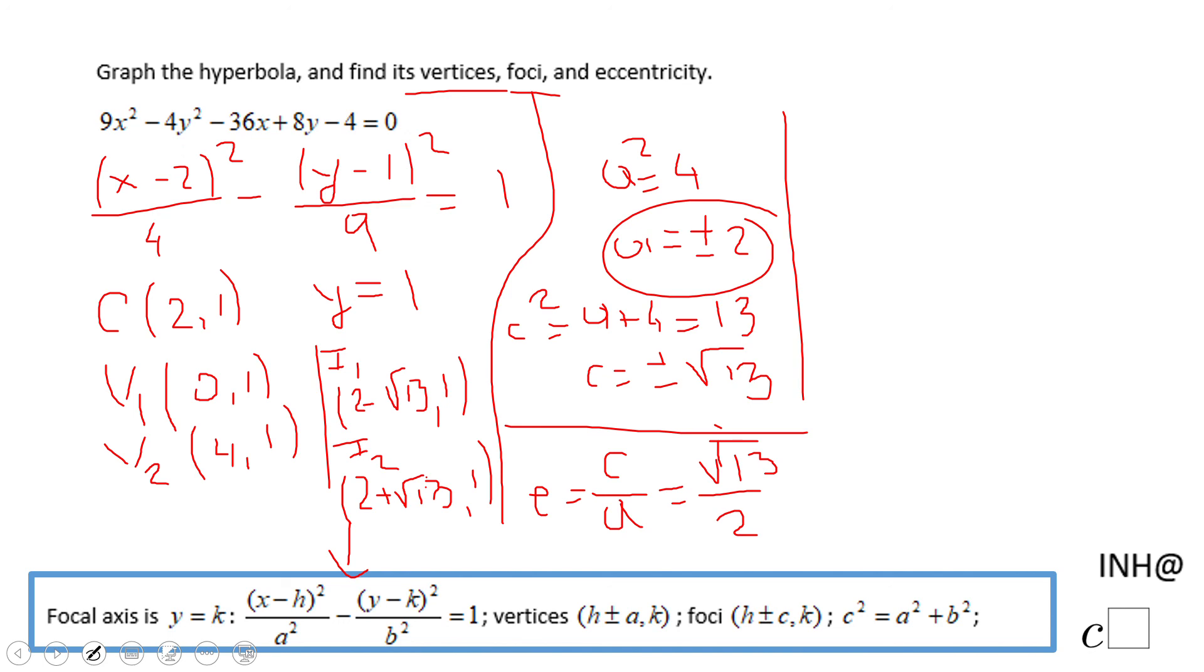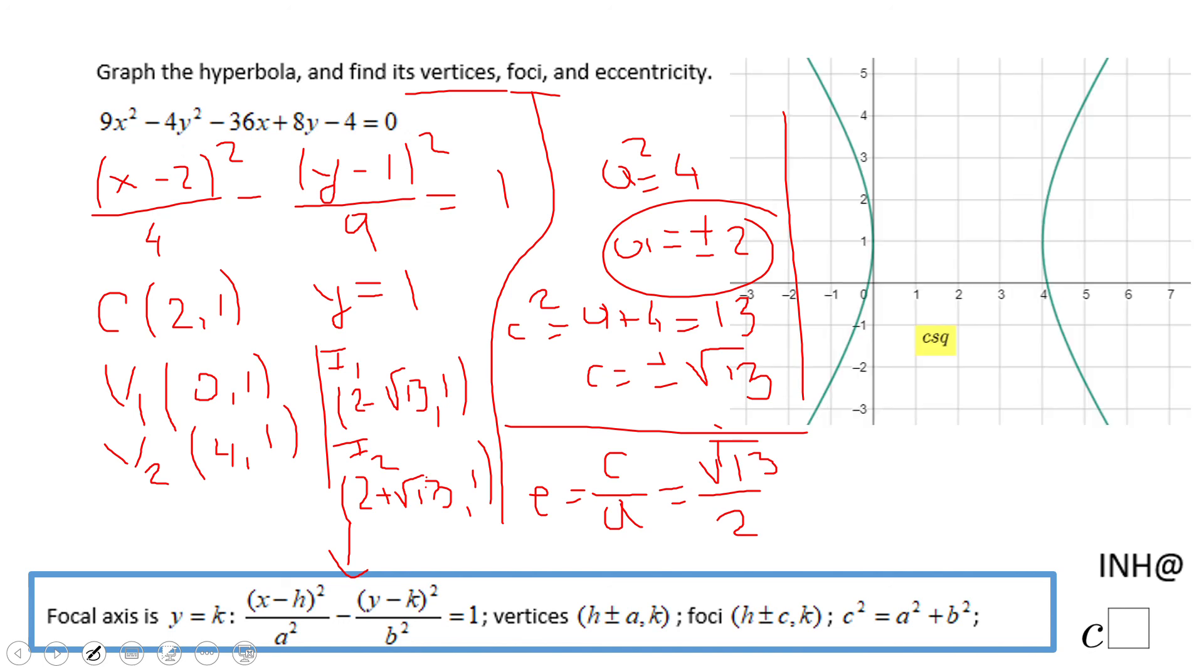The final thing for this problem is this graph, which contains all the elements we have here, so you can do it at each step. You can plot the center, then plot these vertices, eventually find the asymptotes, and then the foci. If you enjoyed this video, don't forget to click the like button and come back to CSquared for more help. Thank you.